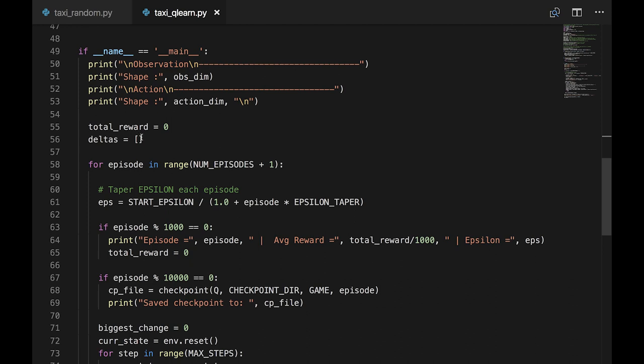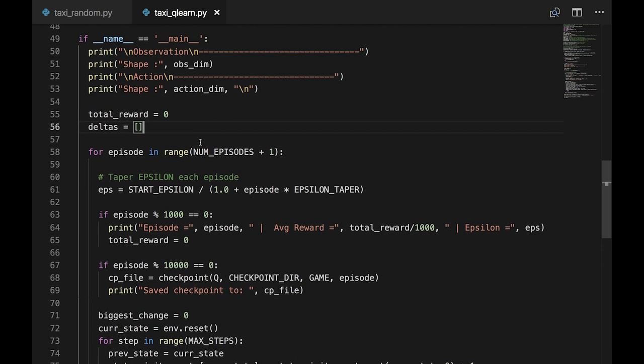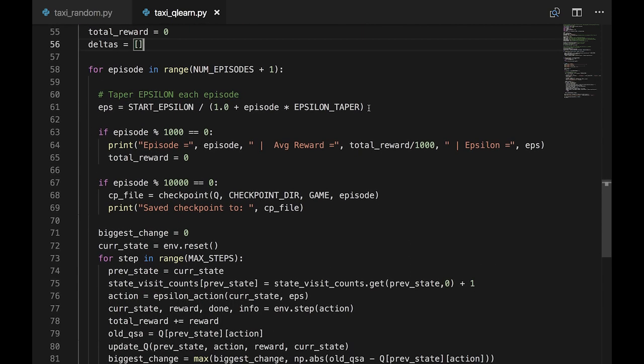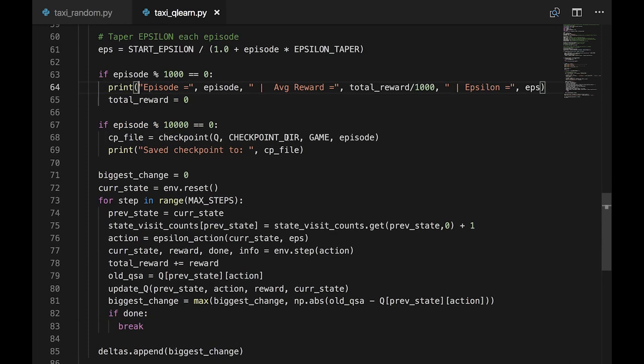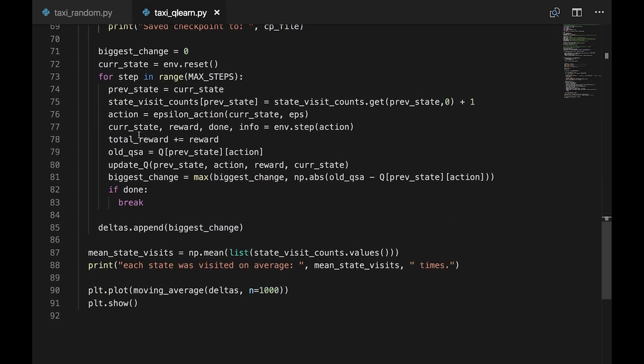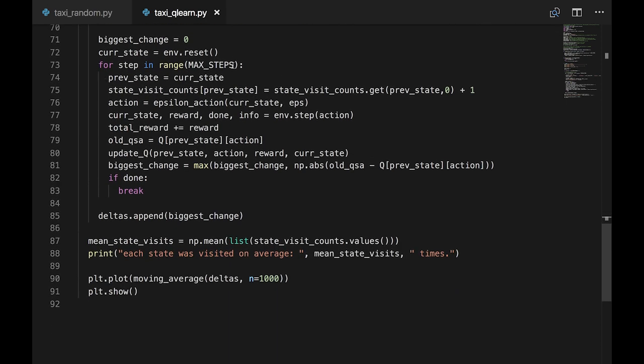Now, onto the main loop. As before, we're going to track the biggest Q value change from each episode in order to visualize how our algorithm is converging. Each episode, we taper epsilon using the algorithm discussed to reduce the probability of our agent taking random actions. Every thousand episodes, we print the average reward and current epsilon. Every ten thousand episodes, we save a checkpoint into the checkpoints folder.